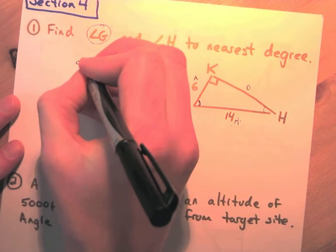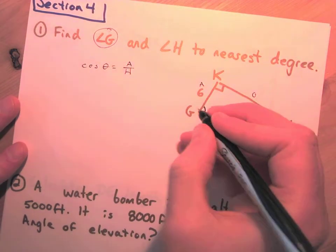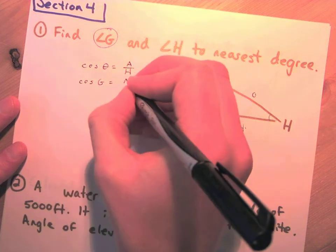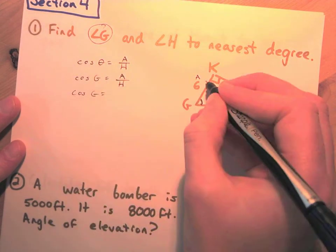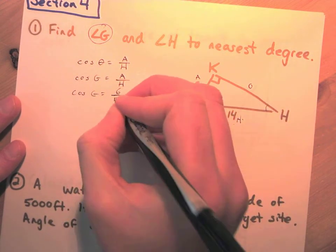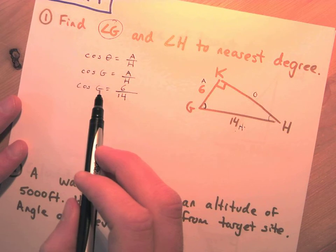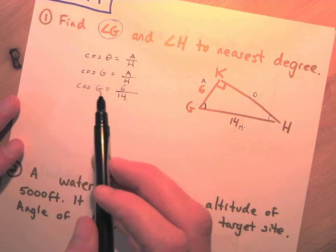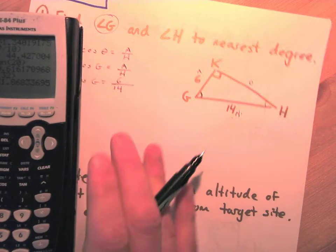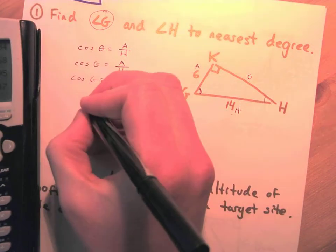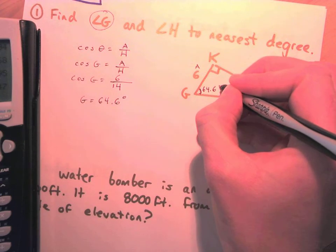We know six and fourteen, so we'll use A and H — that means cosine. Cos θ = A/H is our formula. So cos G = A/H. We can put in numbers: A is 6 and H is 14, so cos G = 6/14. To solve for G, we use the inverse cosine: G = cos⁻¹(6/14), which gives us G = 64.6 degrees.